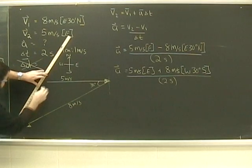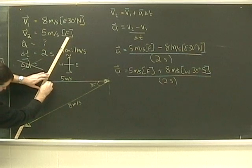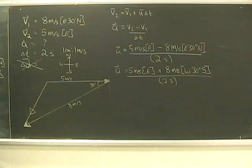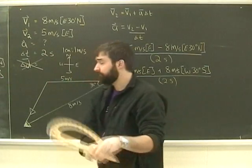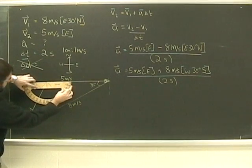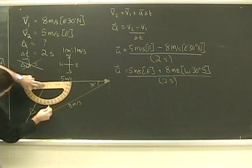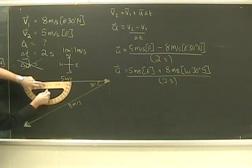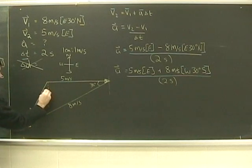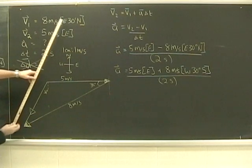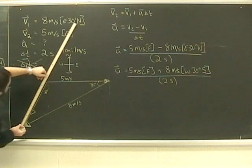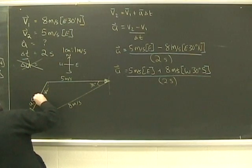My answer then will be from where I started toward my ending point. I grab my protractor and measure this angle. It's 120 degrees, which means this angle that I'm interested in is only 30 degrees. The length of this works out to be about 4.5 meters per second.